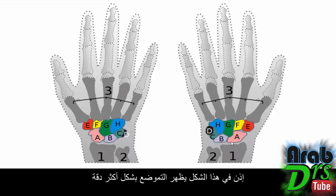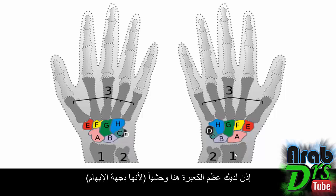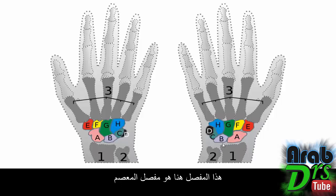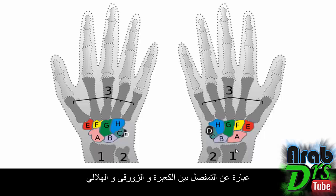In this diagram, the positioning is shown a bit more accurately. You've got the radius bone here laterally because it's thumb side, and you've got the ulnar bone here. You've got the scaphoid and the lunate bone articulating with the radius, and this joint here is the wrist joint. This joint is a condyloid synovial joint — the articulation between the radius, the scaphoid, and the lunate.